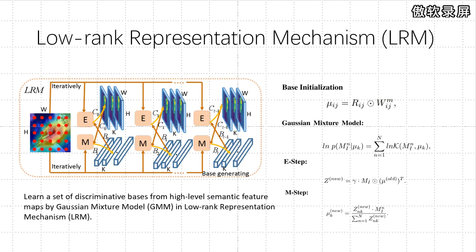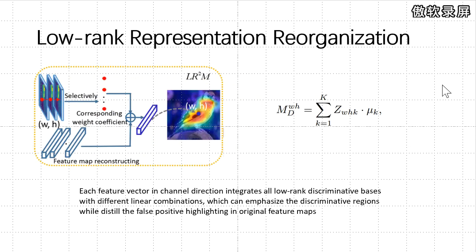Our proposed low-rank representation mechanism is designed to learn regions from the high-level feature maps to construct the low-rank discriminative bases through Gaussian mixture model (GMM). The GMM consists of: one, a feature-guided base initialization module; two, an expectation step (E-step) module; and three, a maximization step (M-step) module. Learning low-rank representation with LRM only forces the network to focus on discriminative details rather than considering the spatial context of discriminative regions.